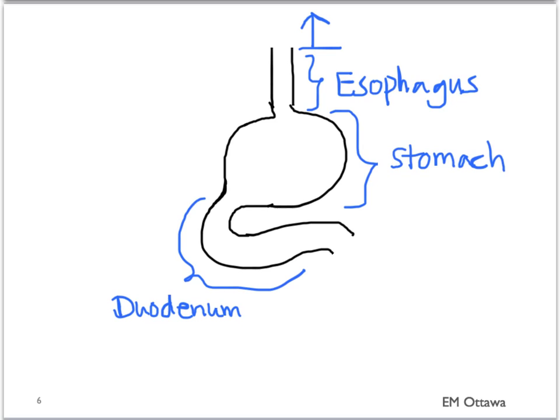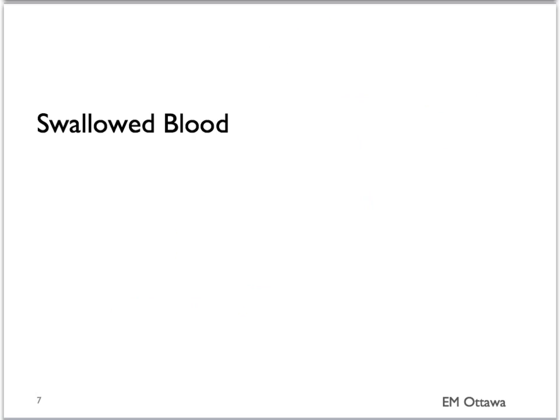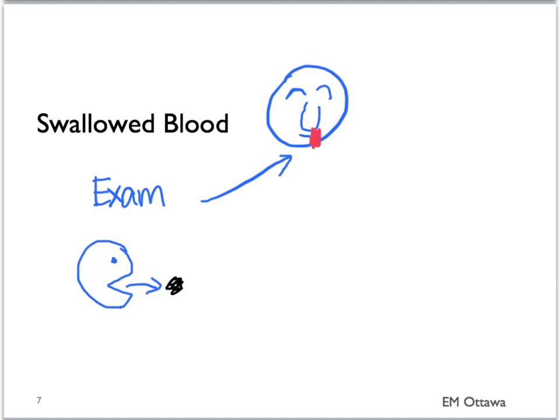Let us look at how each of them might present. First, proximal to the esophagus: if any blood proximal to the esophagus is being swallowed, then it will present as an upper GI bleed. The most often seen swallowed blood would be from epistaxis. Therefore, on presentation, you would want to ask the patient about any history of bleeding and look for any obvious bleeding from the source. Swallowed blood can present as coffee ground emesis or melena.